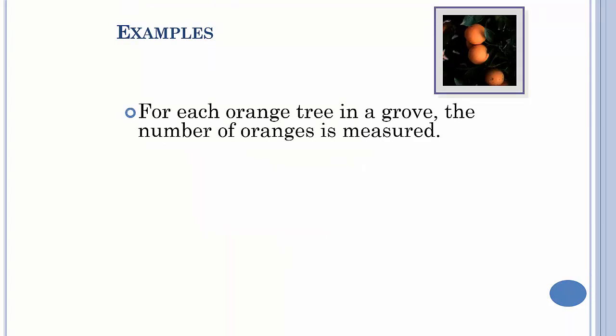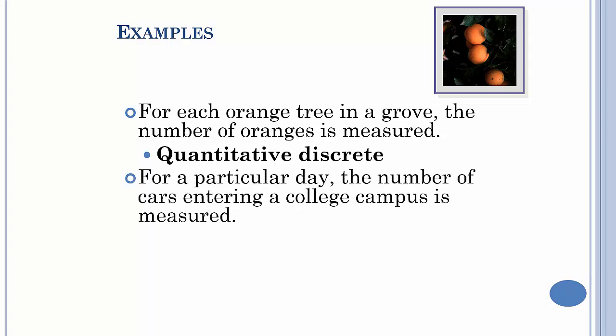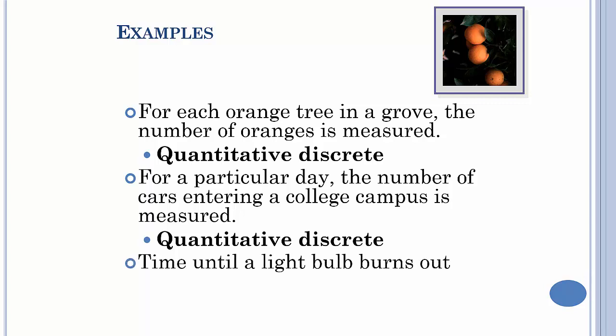Simple examples: each orange tree in a grove, that's quantitative discrete. For a particular day, the number of cars entering a college campus, you're counting the number of cars, so it's discrete. The time until a light bulb burns out.